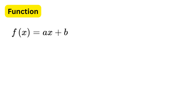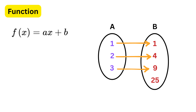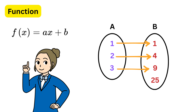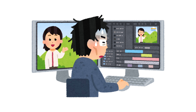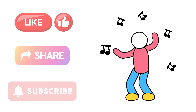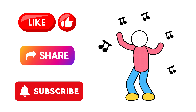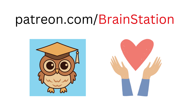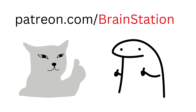A function is a special kind of relation where every element in the domain is connected to exactly one element in the codomain. In other words, each input has one and only one output, making functions very useful in mathematics. In the next video we will dive into functions in detail, explore their types, and see how they are different from general relations. If this explanation helped you, please like the video and share it with others who might benefit.